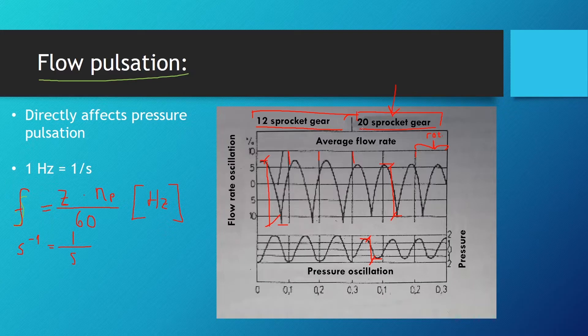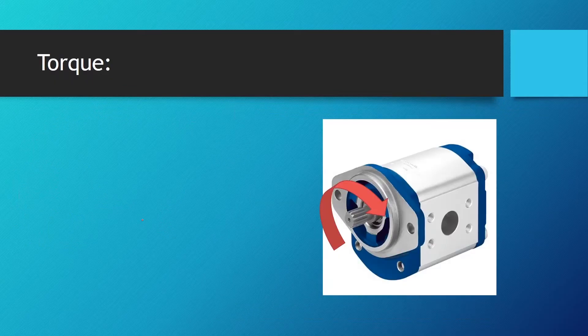Why is that the case? More teeth on the gear means less space in between them to create a large difference. More teeth on the gear means less pulsation of flow.